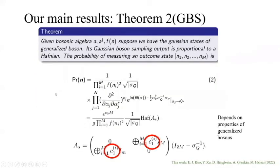Let's talk about theorem two, which is Gaussian boson sampling. Given the boson algebra with degree f(n), and suppose we have a Gaussian state of generalized bosons, then one can prove that the probability still depends on Hafnians. But now these matrices A will have some coefficients which depend on different generalized bosons.